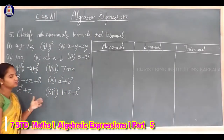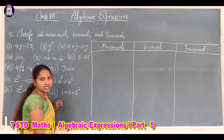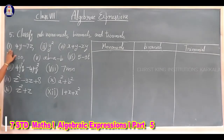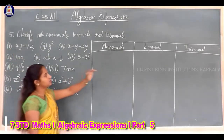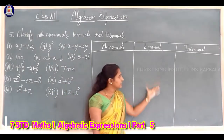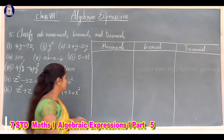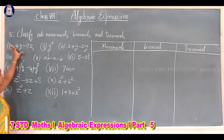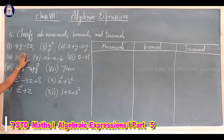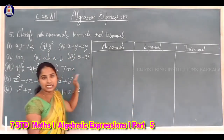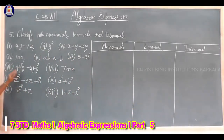An expression containing more than three terms is called a multinomial. For the given expressions, you have to classify them. You can make columns — first column: monomial, second column: binomial, third column: trinomial — and write each expression in the appropriate column.